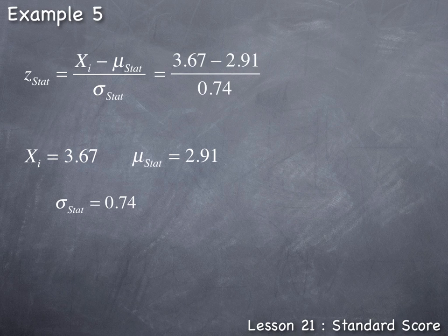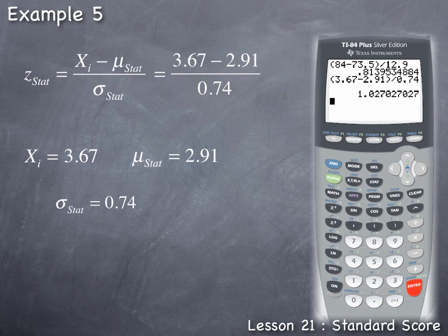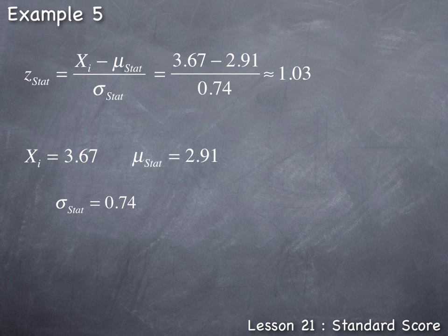Now we can input each of these values into the standard score formula to get the standard score for her score on the statistics exam. To calculate the standard score, we go left parenthesis 3.67 subtract 2.91 right parenthesis divide by 0.74. Since the final result for the standard score needs to be accurate to the nearest hundredth, we look to the nearest thousandth place value, which is a 7. Since 7 is over halfway, this result gets rounded up to 1.03, meaning that this student's score on her statistics exam was 1.03 standard deviations above the mean exam score for all the other students who took the exam.